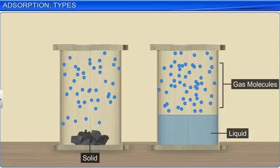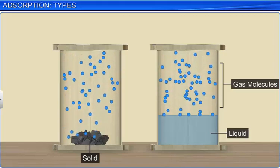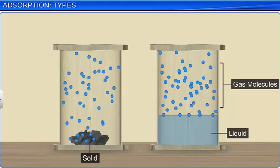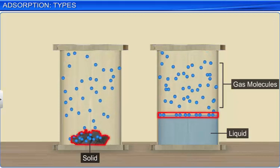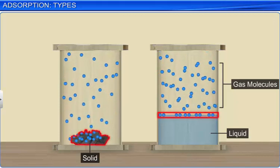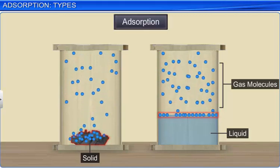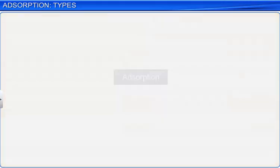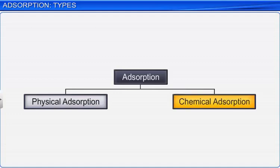The accumulation of molecular species on the surface of a solid or liquid, resulting in a higher concentration of the molecules on the surface, is known as adsorption. Adsorption of gases on solids can be of two types: physical adsorption and chemical adsorption.